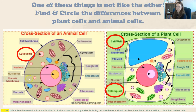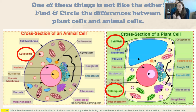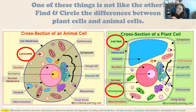Both animal cells and plant cells have vacuoles, but in the animal cell there are many small vacuoles, whereas the plant cell has one big central vacuole. This central vacuole stores water for the cell and keeps the plant upright. When the vacuole gets very empty and lacks water, you'll notice the plant starts to shrivel up — this is different from what happens in an animal cell.